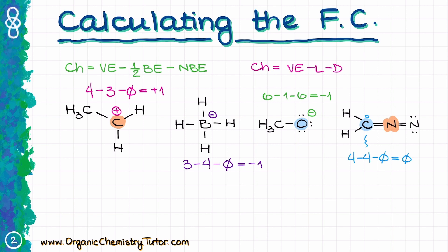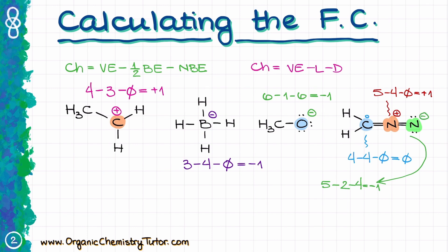For the nitrogen atom in the middle: five valence electrons minus four lines minus zero dots gives a charge of plus one, so I'll indicate plus on that nitrogen. For the nitrogen on the right side: five valence electrons minus two lines connecting it to the other nitrogen minus four dots gives a charge of negative one, so I'll show it as such.